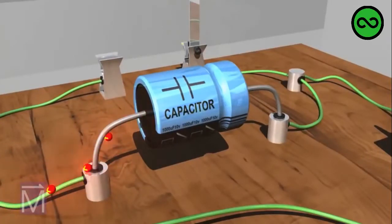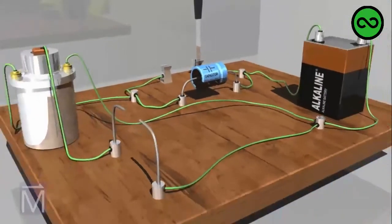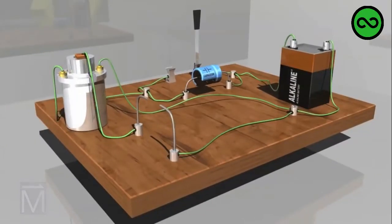The job of the capacitor, called a condenser in auto-ignition systems, is to safely absorb the back EMF and prevent the surge from reaching the switch and creating a damaging spark across those points.